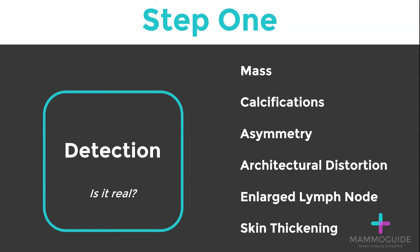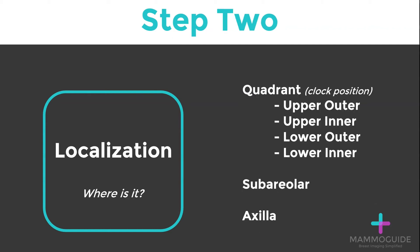Once you have identified a possible abnormality, then you need to determine: is it a real finding? Step two is localizing an abnormality — where is it located? This is typically done by describing the quadrant it is within: upper outer, upper inner, lower outer, or lower inner.